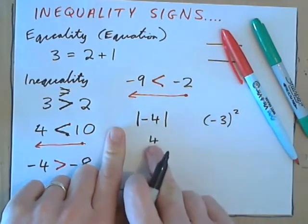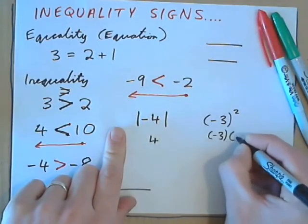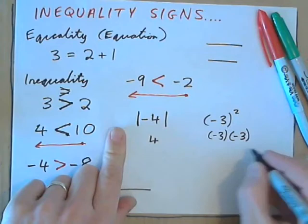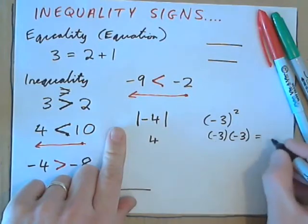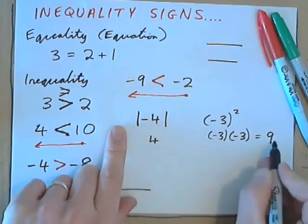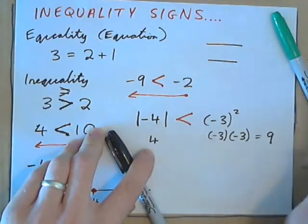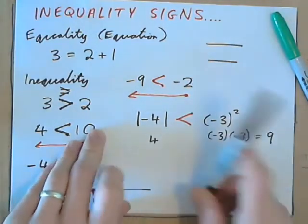Negative 4 is 4 units away from 0. Negative 3 all squared is negative 3 times negative 3. Negative times negative is positive. Positive 9. So this is 4. This is 9. And 4 is less than 9. So we put the inequality sign like that.